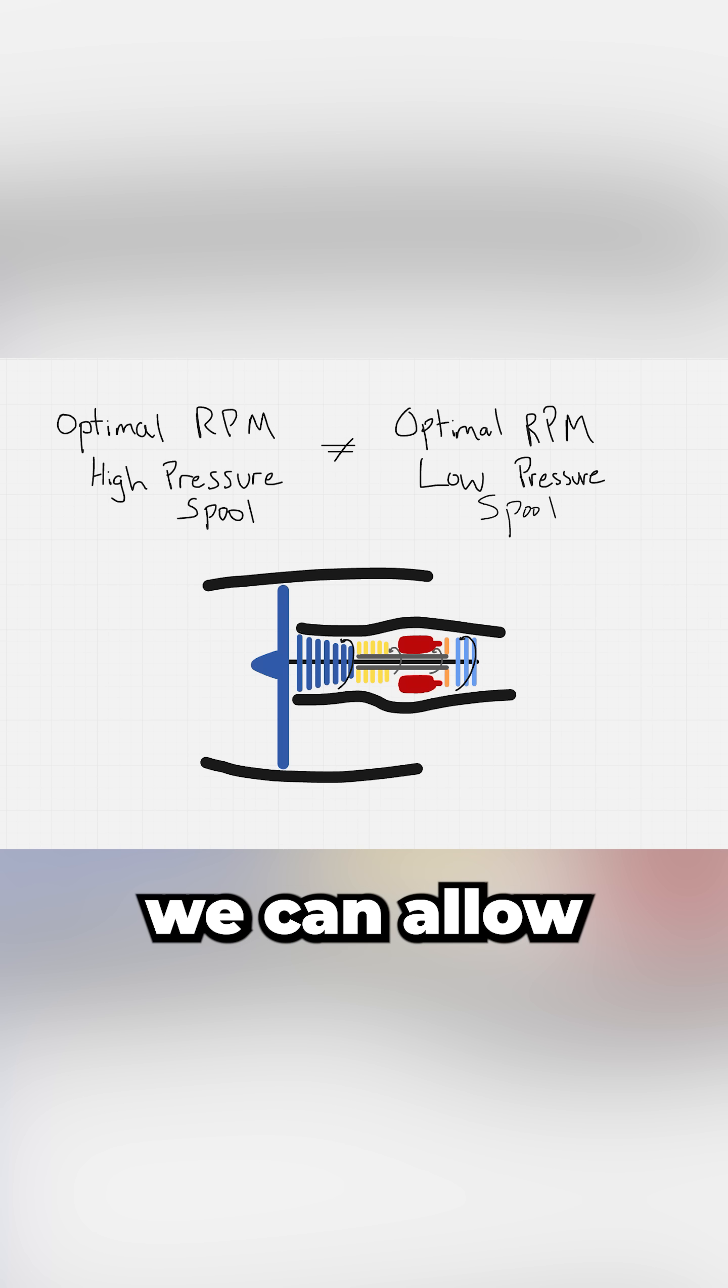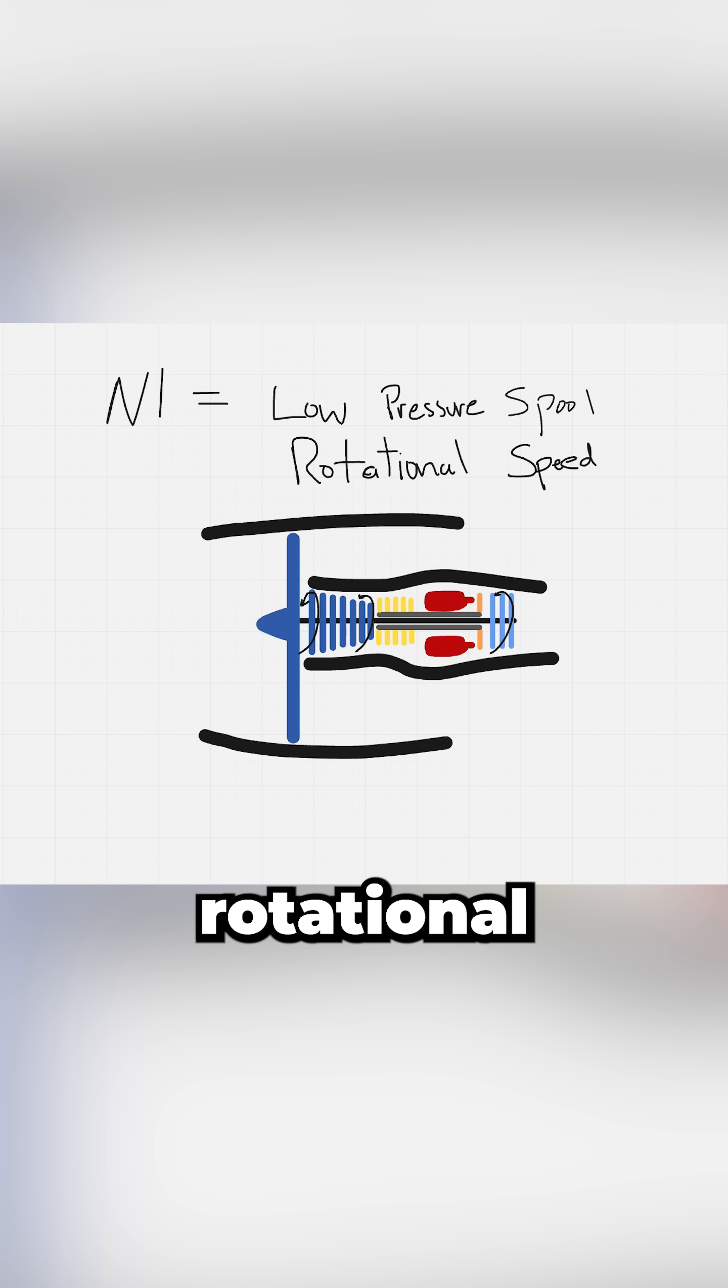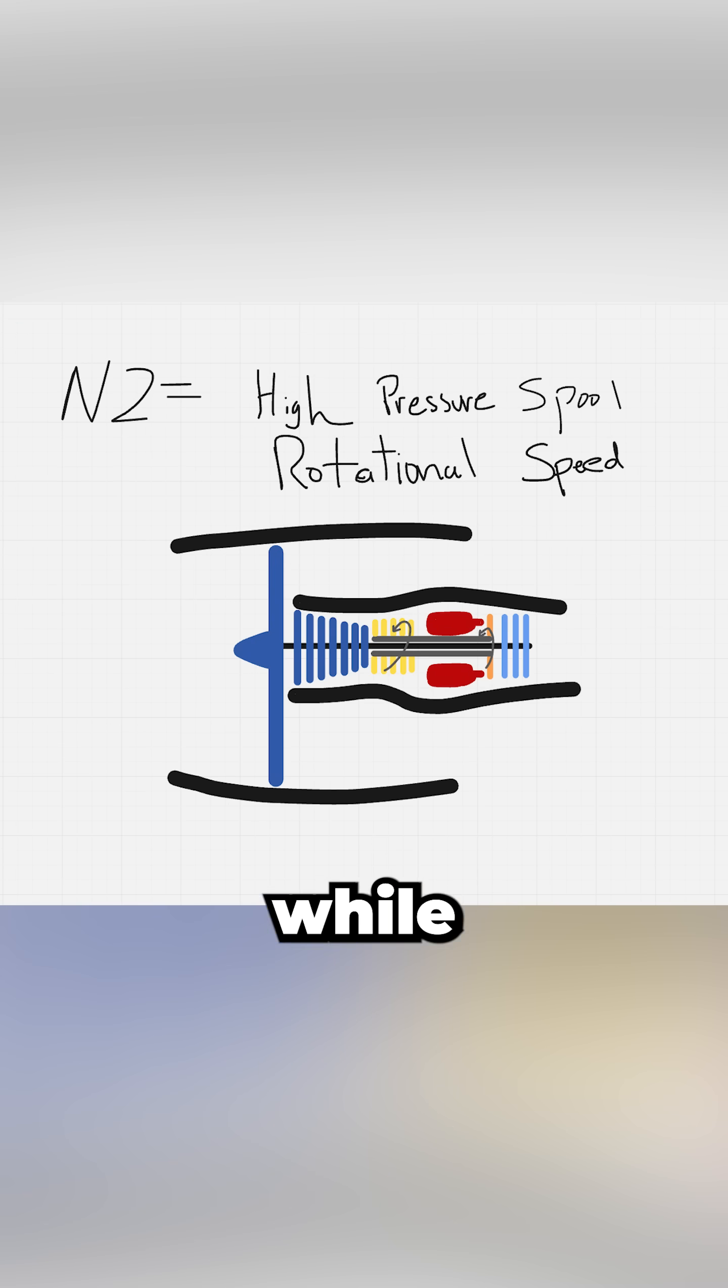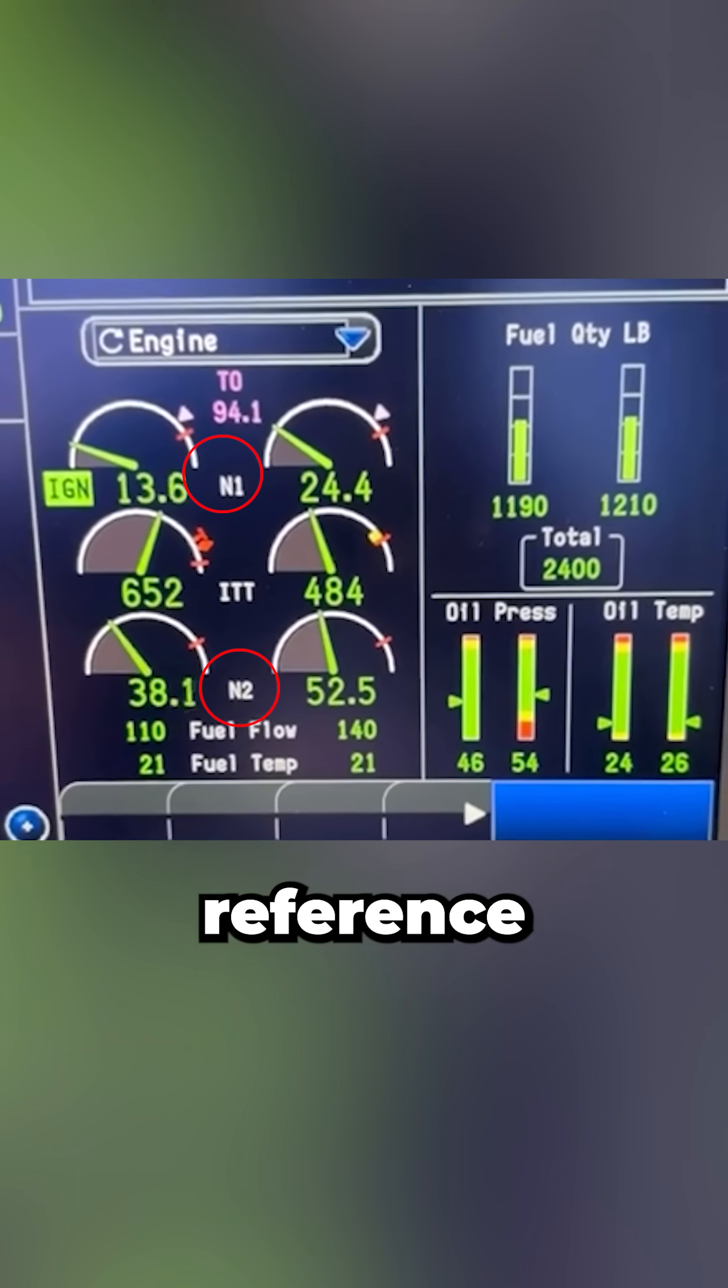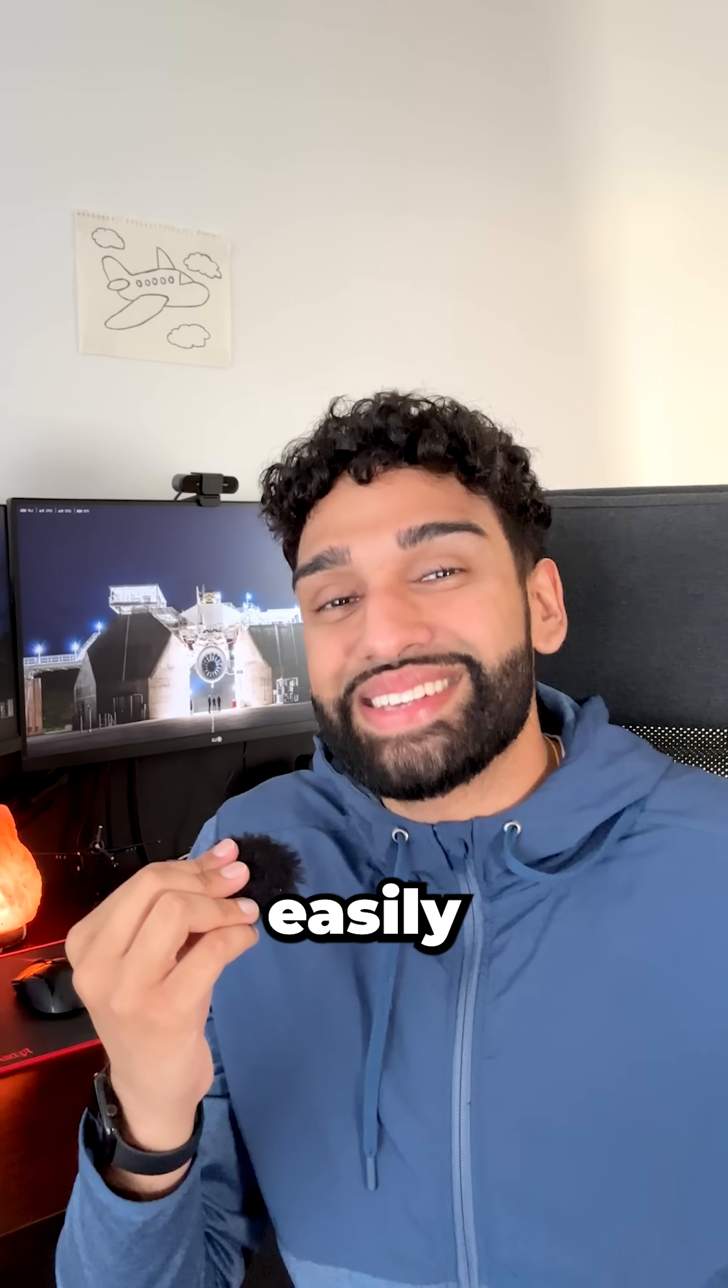Because these spools are separate, we can allow each to rotate at its own optimal speed. N1 refers to the rotational speed of the low pressure spool, while N2 refers to the speed of the high pressure spool. Both are shown as percentages of their reference RPM, so pilots can track them easily.